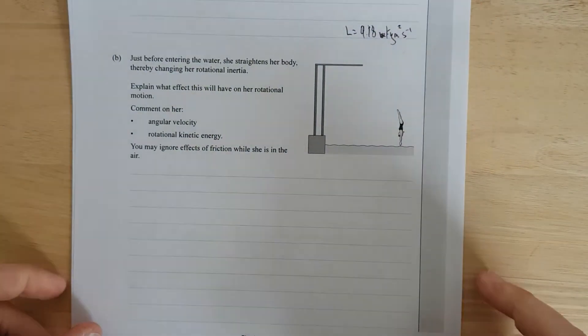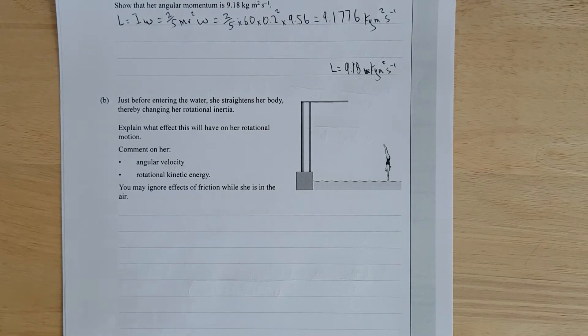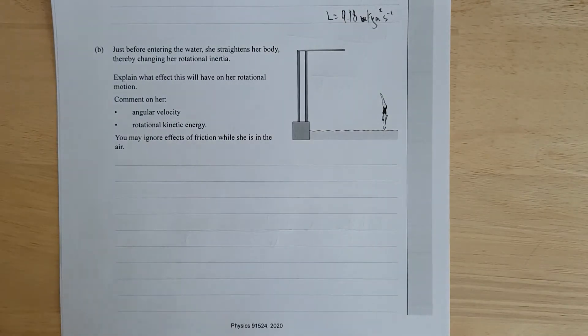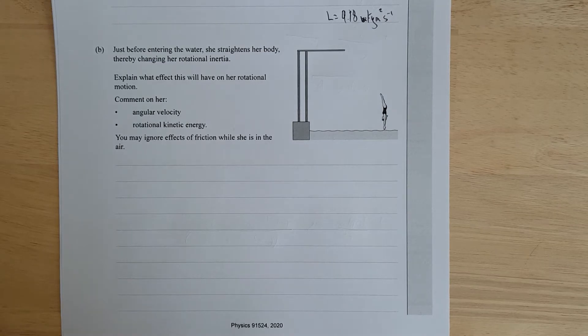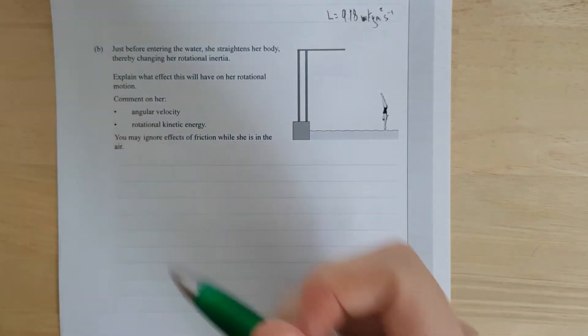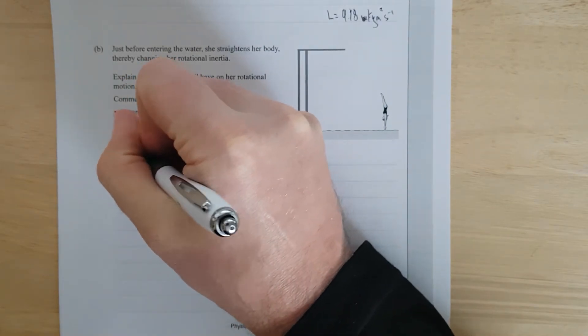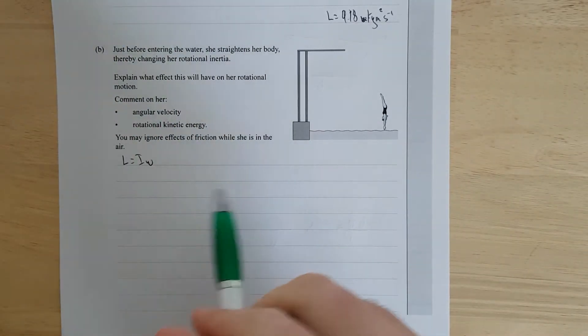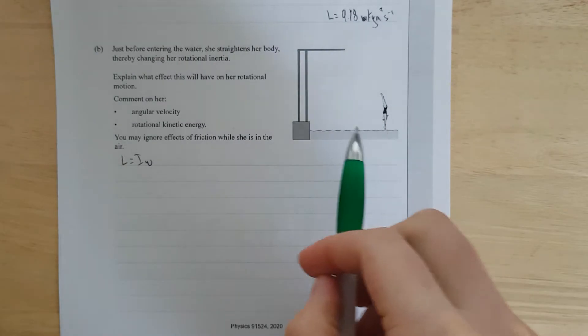Right, we've got the next one. Just before entering the water, she straightens her body. Therefore, changing her rotational inertia. Explain what effect this will have on her rotational motion. Comment on her angular velocity, it'll decrease. And her rotational kinetic energy, it'll also decrease. You may ignore the effects of friction while she's still in the air. It's because we always ignore air resistance. So I'll just sort of explain what's sort of going on.